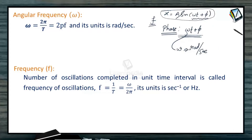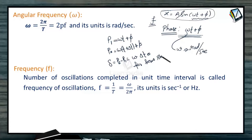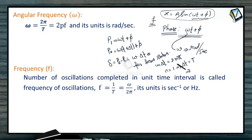Whenever there is a change of 2 pi in phase, the same motion repeats. For example, if phase at a certain instant is omega t plus phi, then after delta t seconds the phase becomes omega(t + delta t) plus phi. So the phase change is omega delta t. Whenever there is a phase change of an integral multiple of 2 pi, omega delta t equals n times 2 pi. For the minimum time interval, when n is 1, that time interval is the time period — the minimum time in which the motion is repeated.